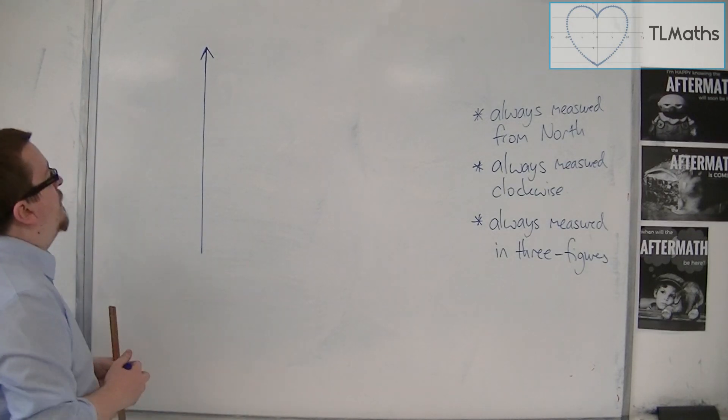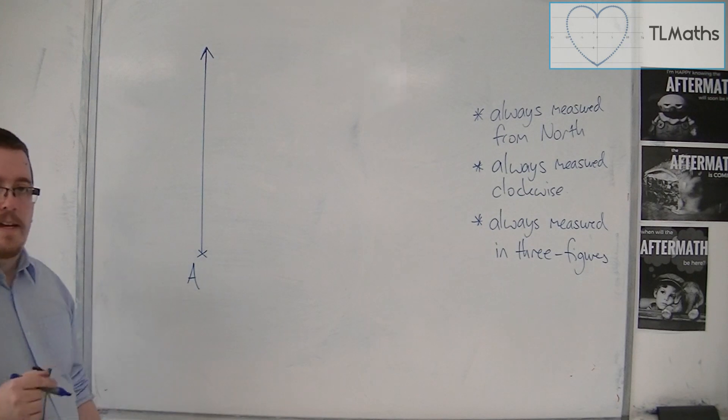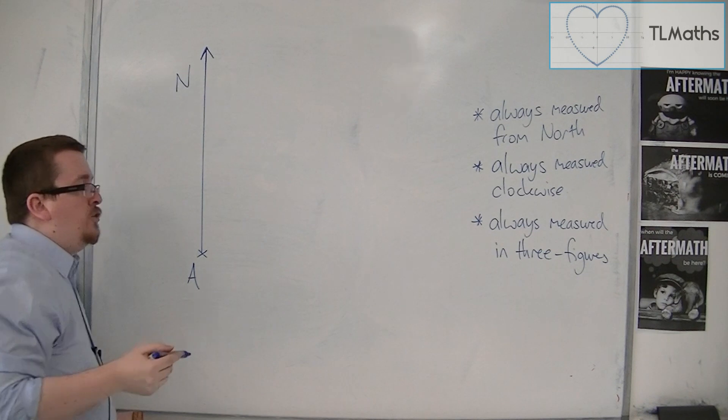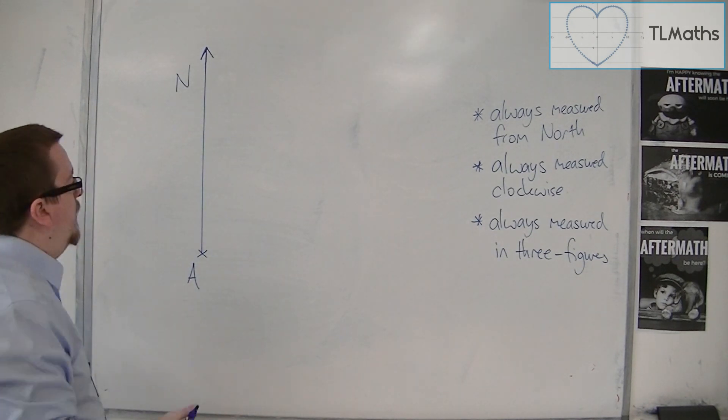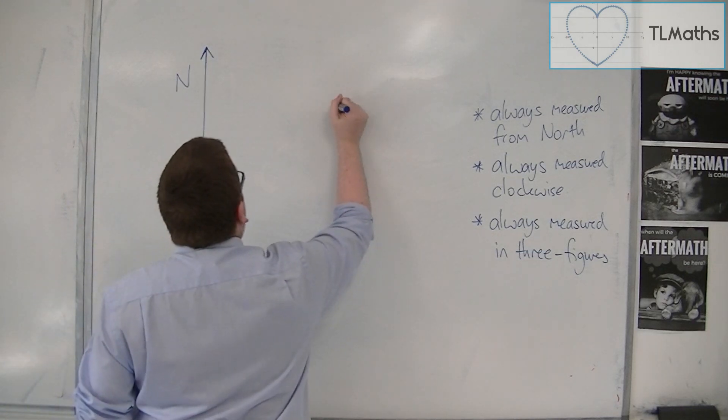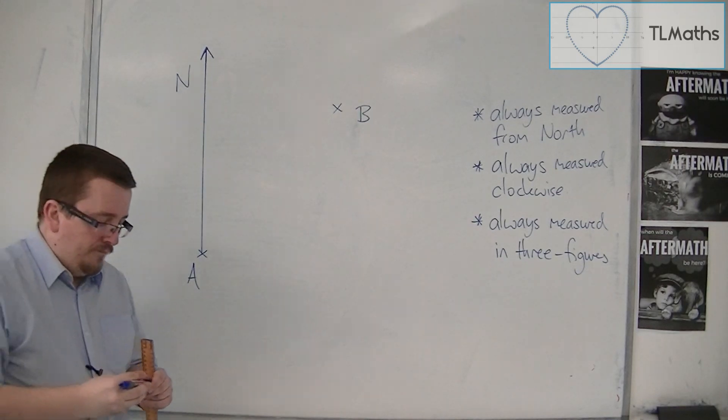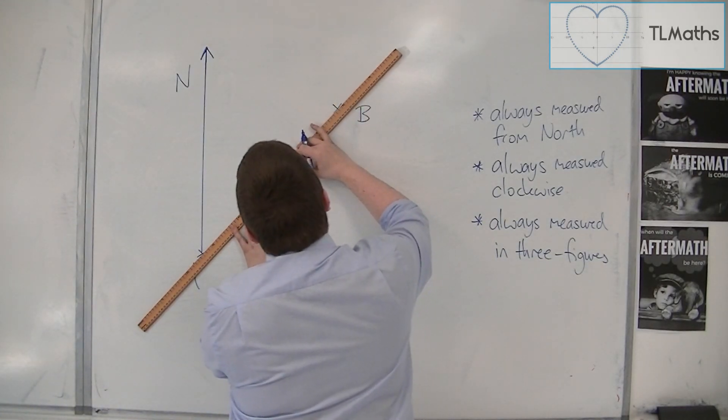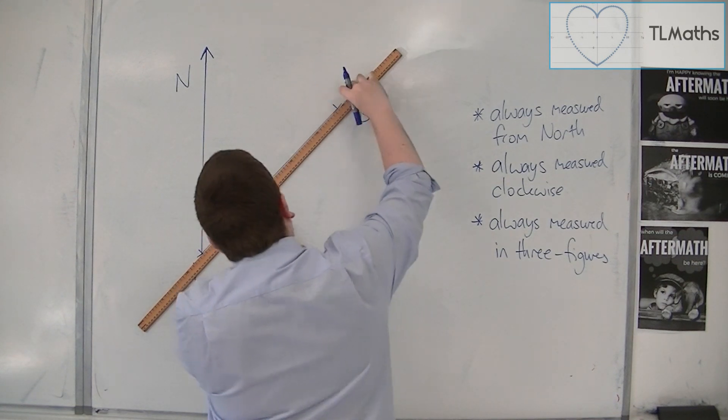So let's say that we have a town that is at point A, and we've drawn a north line. You can imagine this whiteboard being a big map. And over here is another town, we're going to call that B. And I'm going to draw a line from A to B to make this clearer.